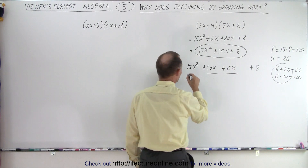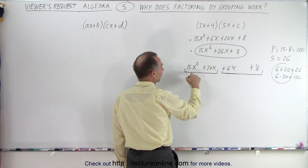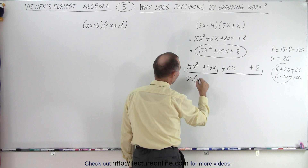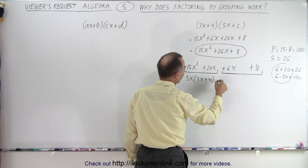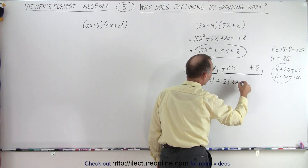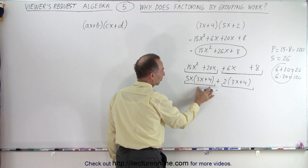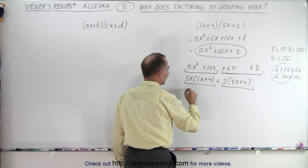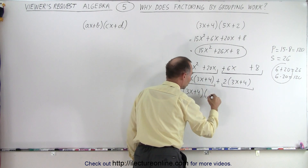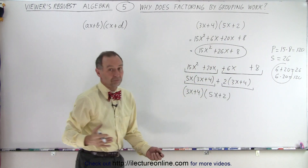Now when we want to factor, we're going to group the first two and the last two terms together. We factor out what's common. We can factor out a 5 and an x, so this is 5x times (3x plus 4). And here we can factor out a 2, and we end up with 3x plus 4. Now, looking at these two terms, we can factor out 3x plus 4. So this becomes (3x plus 4) times (5x plus 2), which gets us right back to the problem we started with. So it appears to work.